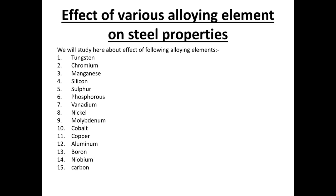In this tutorial on material science, we will study the effect of various alloying elements on the properties of stainless steel. An important thing is that a single alloying element provides many properties to steel, but here I will discuss the most important ones only.